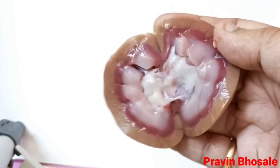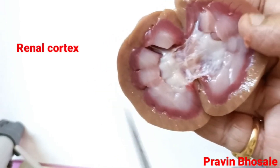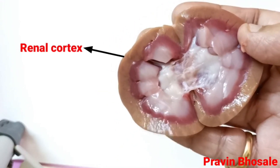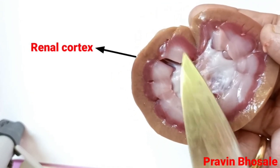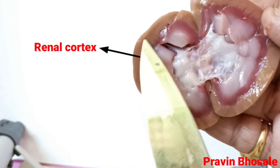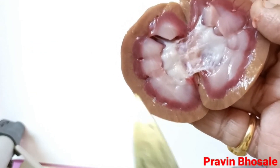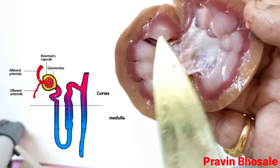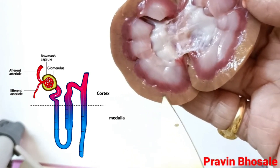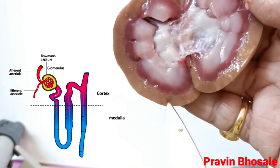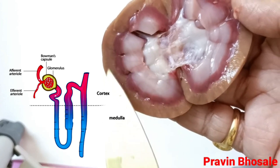So what you see now is the LS of the kidney. This is the renal cortex. It is the outer peripheral brown-colored and granular region. The renal cortex consists of the Malpighian body, convoluted tubule, and blood vessels.